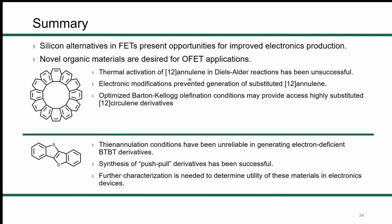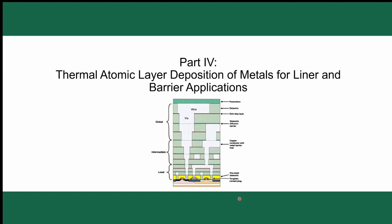Unfortunately, this was about two months before I defended, right when I got my postdoc offer, so I couldn't really continue on it and couldn't get collaborators interested. To summarize the 12-circulene work: thermal activation of 12-annulene in Diels-Alder reactions was unsuccessful, as were electronic modifications. The optimized Barton-Kellogg olefination conditions from other projects in the group may still provide access to highly substituted 12-circulene derivatives. Thioannulation conditions for generating BTBT have been unreliable for fully electron-deficient derivatives; push-pull derivatives were successfully synthesized but further characterization is needed to determine their utility in electronic devices.